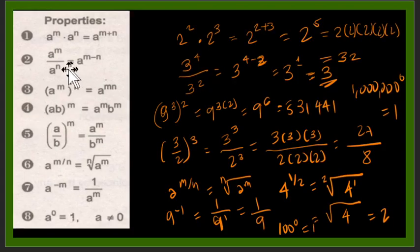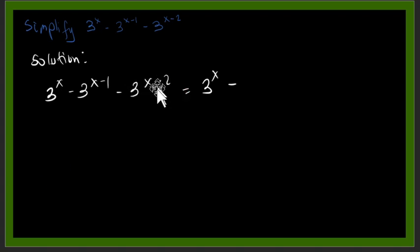Go back, so we'll apply this one: a to the power of m over a to the power of n equals a to the m minus n. So that's why this is the expression.